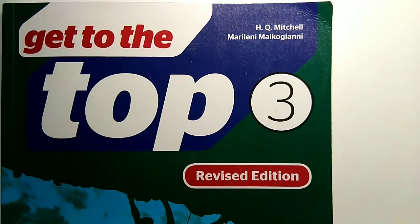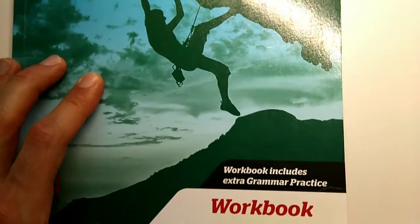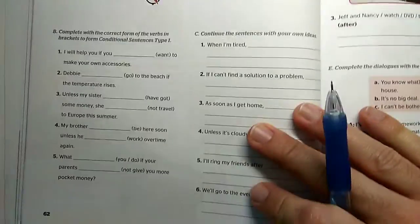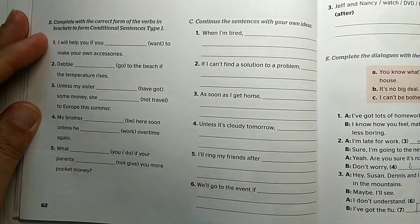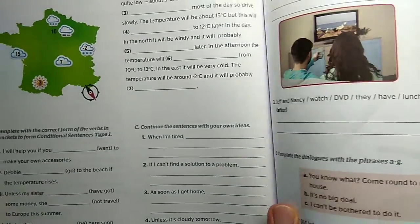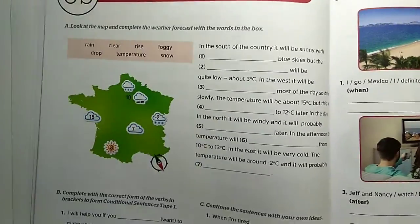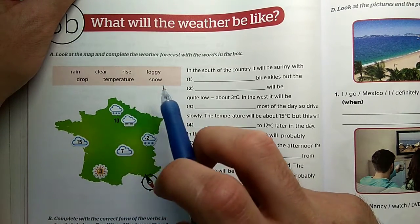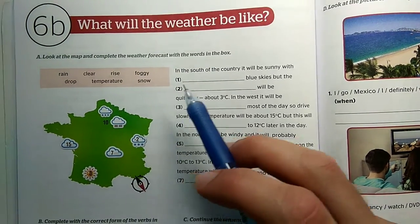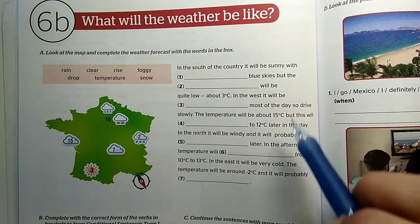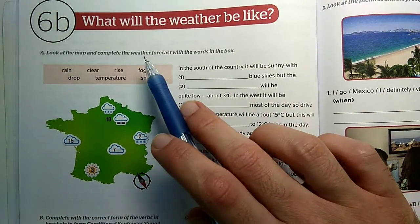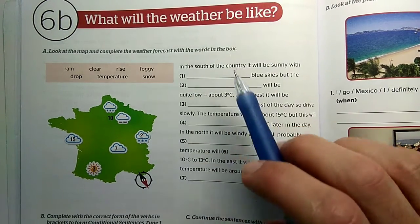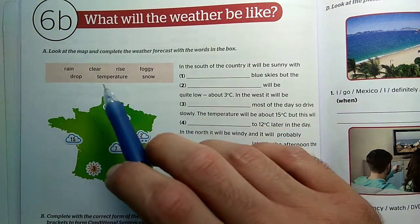Now it's time to practice some in your get to the top three workbooks, so open them at page 62 where we are going to start with activity A. Here you can see a map and you can see some words in the box that we have to put in the text. It's a weather forecast so we have to complete the weather forecast with these words in the box.